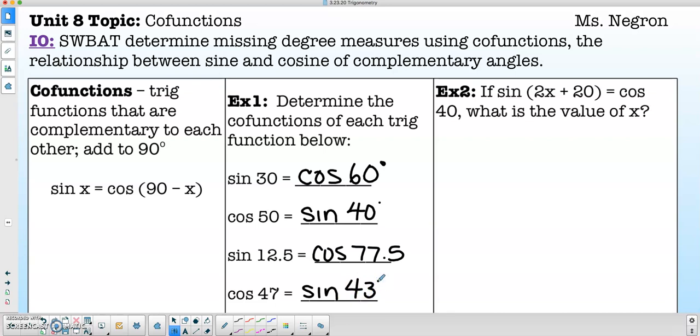So you might also see an algebraic approach here. So if we look at example 2, it says, If sine of 2x plus 20 is equal to the cosine of 40, what is the value of x?